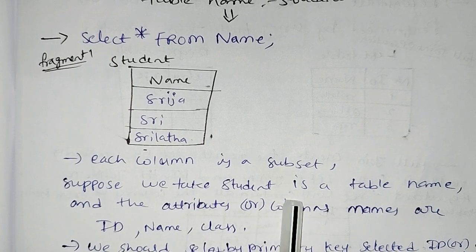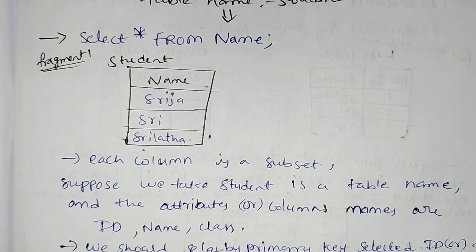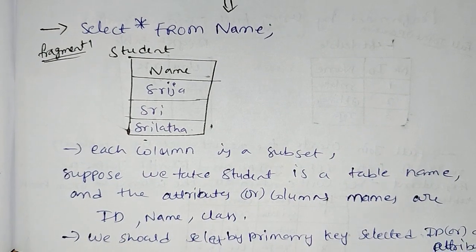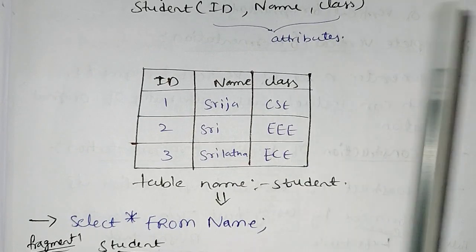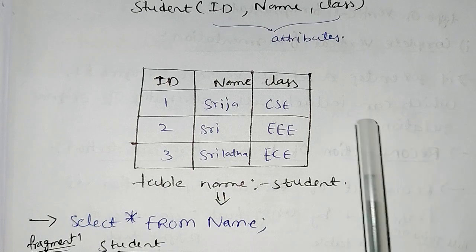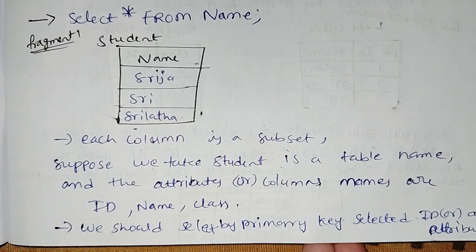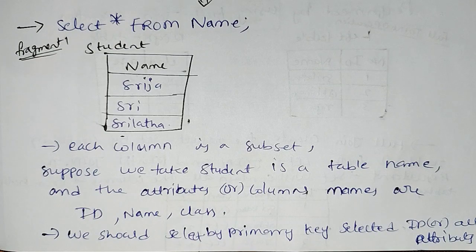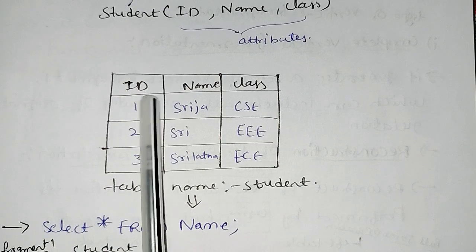Suppose we take the student table. The attributes are columns: ID, name, and class. ID is the primary key and is unique.